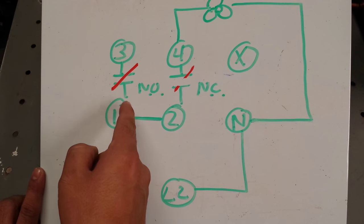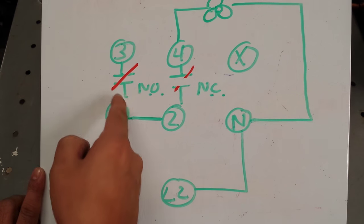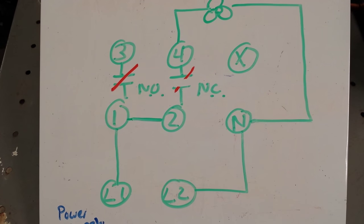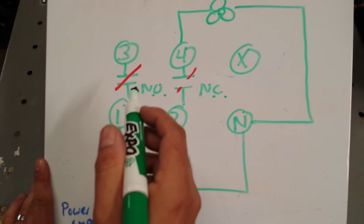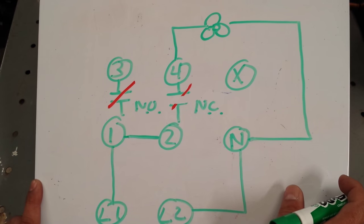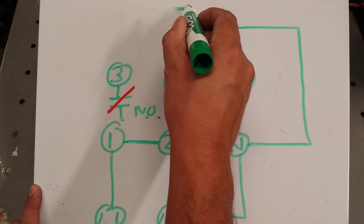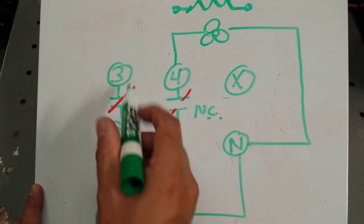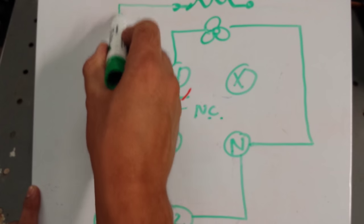Now that contacts between 1 and 3 is closed, whatever it energizes should be running provided there is a complete circuit. So let's say we have some sort of defrost here. So let's put that in there. We'll bring this down a little bit. We'll put the defrost heater here.